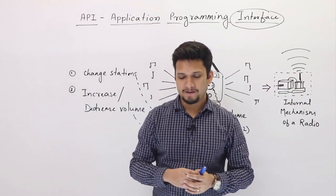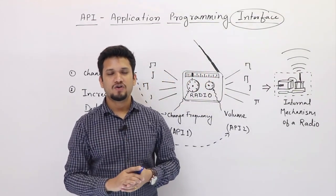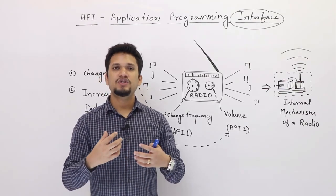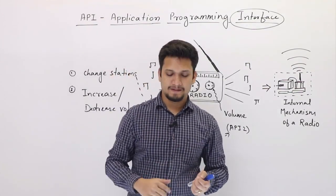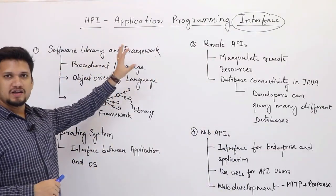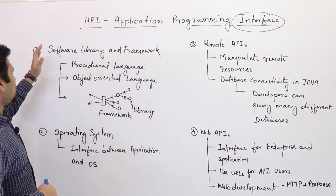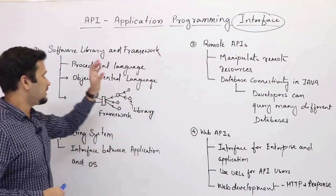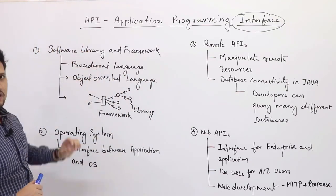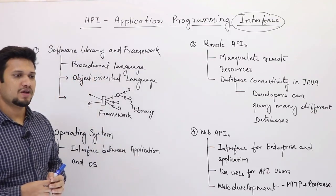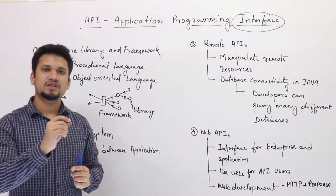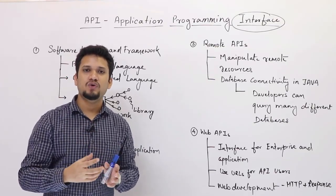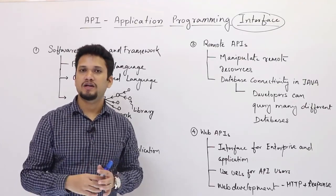So this is the simple meaning of API. Now we need to understand API from the perspective of a developer — what API means from the development point of view, and in which context it has actually been used. You can categorize where APIs are being used. First, you can categorize API as software library and framework. So a software library: for example, if you are writing an Android application, you interact with the OS through the Android framework, which provides various methods using which you can interact with the OS — for example, draw the UI or make a network call.